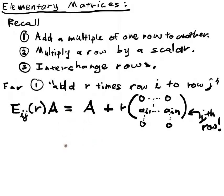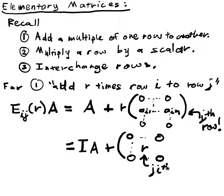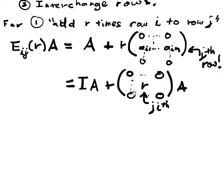So if we manipulate this using our matrix algebra, well this is the same as identity matrix times A, plus the matrix where I have 0 up to here, I have zeros everywhere, except for an r in the j i-th entry. And I multiply that times A. So what'll this do? So this is the j i-th entry, so this is in the jth row and the i-th column.